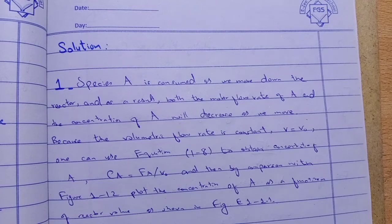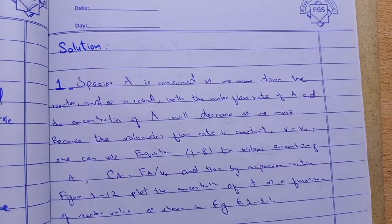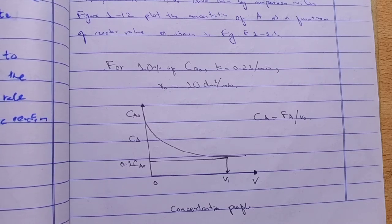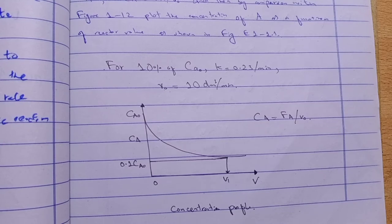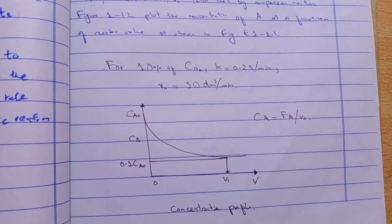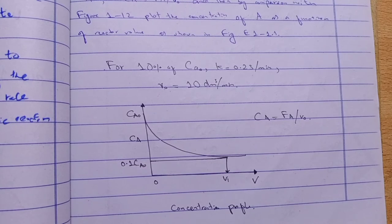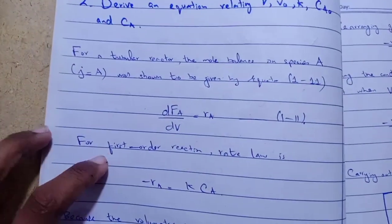By comparison with the figure, we plot the concentration of A as a function of reactor volume. Concentration is on the x-axis and volume is on the y-axis. The concentration starts at CA naught and decreases down to 0.1 CA naught. The volume at which CA equals 0.1 CA naught is V1, which we need to find. This is how you can easily draw the concentration profile for any question.